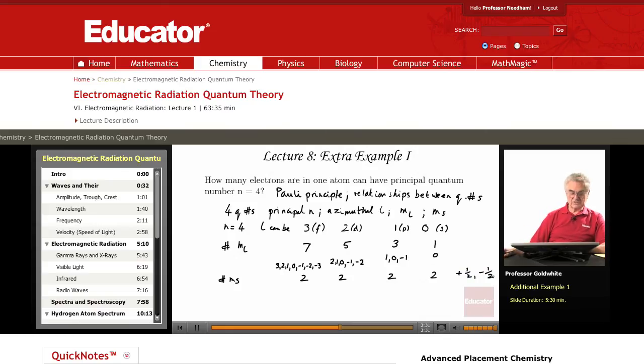So how many possible electrons does this give for each of these l quantum numbers? 7 times 2, 14 possibilities. 5 times 2, 10 possibilities. 3 times 2, 6 possibilities. 1 times 2,